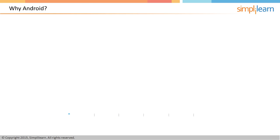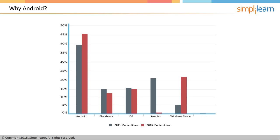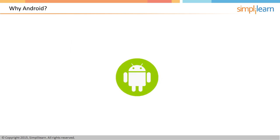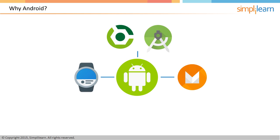Why Android? With the highest market share, Android is the dominant mobile operating system today. It's running on countless models of smartphones, tablets and other devices. The whole Android ecosystem underwent many improvements. We got new gadgets like smartwatches, new software like Gradle, Android Studio, and Android's new operating system, which is the 6.0 Marshmallow.